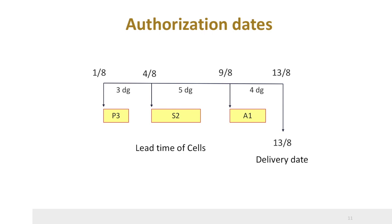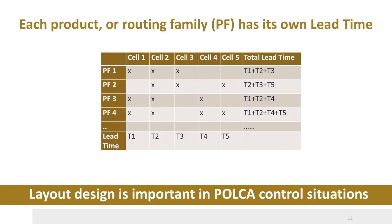In the example given here, the job requires processing in P3, S2, and A1. The authorization date for cell S2 is August 4th. This means that this job is not allowed to start processing in this cell until August 4th, even if cards are available from the loops P3–S2 and S2–A1. The lead times for the various product families can be easily calculated when using POLCA.